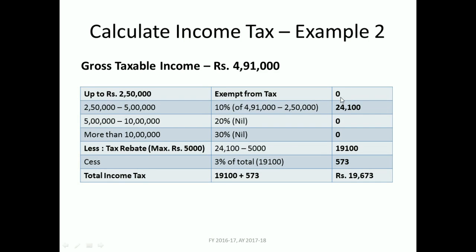For this gross taxable income of four lakh ninety one thousand: up to two lakh fifty thousand — no tax. From two lakh fifty thousand to four lakh ninety one thousand — ten percent on one lakh ninety one thousand, which is nineteen thousand one hundred. The remaining slabs are nil since income is below five lakhs. Since it is below five lakhs, the tax rebate of five thousand is applicable, so the tax becomes nineteen thousand one hundred minus five thousand, giving fourteen thousand one hundred.